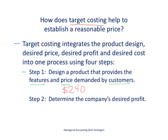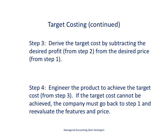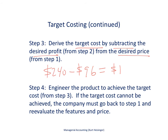As a company, we've determined that our desired profit is 40% of the sales price. That means we take 240 dollars — our sales price — times 40%, and that gives us a desired profit of 96 dollars. Next, we derive the target cost by subtracting the desired profit of 96 dollars from the desired price of 240 dollars. So 240 minus 96 tells us that our target cost in manufacturing the laser printer is 144 dollars.